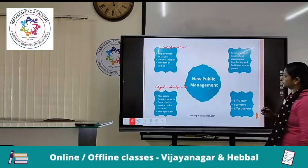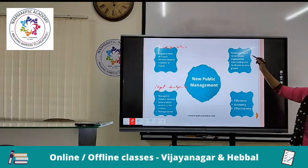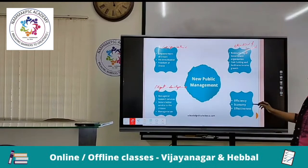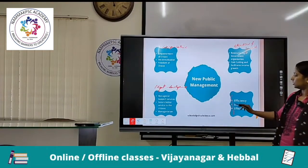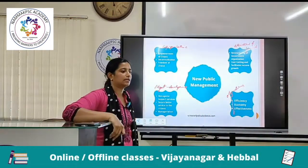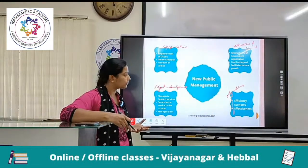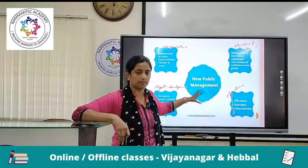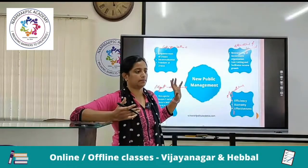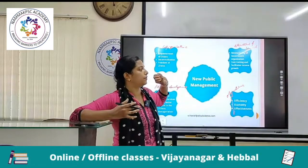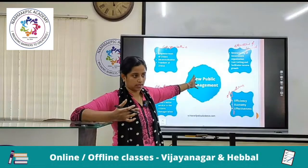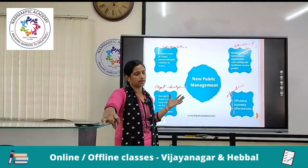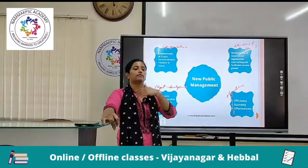Then restructuring of government organization, cost cutting and facilitating income growth — these are structural and financial developments. And then efficiency, economy, effectiveness — these are the objectives of NPM. If you look at the components of this diagram, you cannot draw much of a correlation between each one of the components here. But you can still represent this as a flowchart of what NPM is talking about in total. There is no clear-cut segregation, but despite that this can be a diagram in your answers — it is a lead for you to develop anything into a diagram.